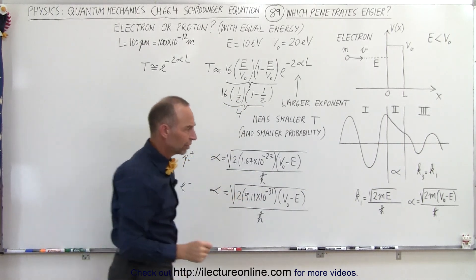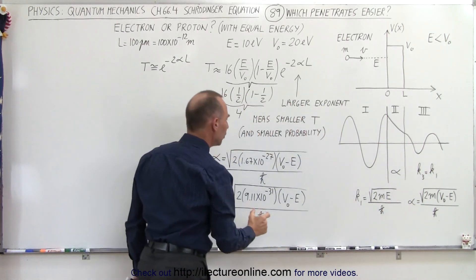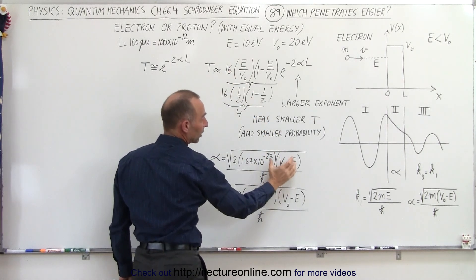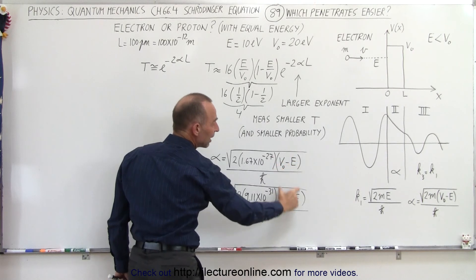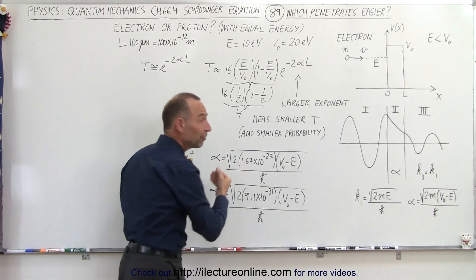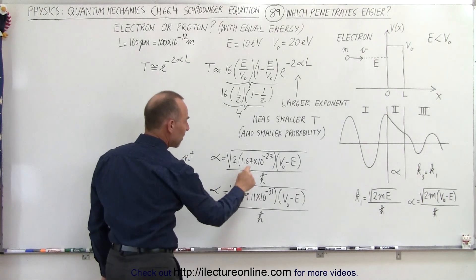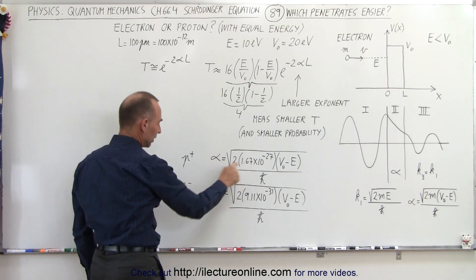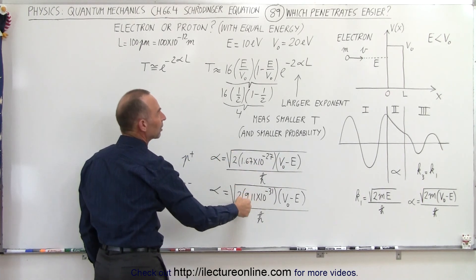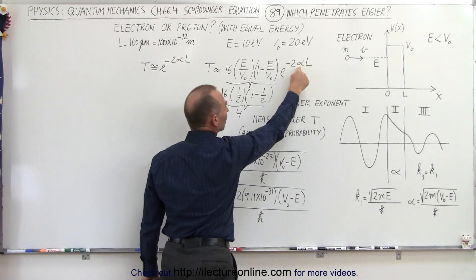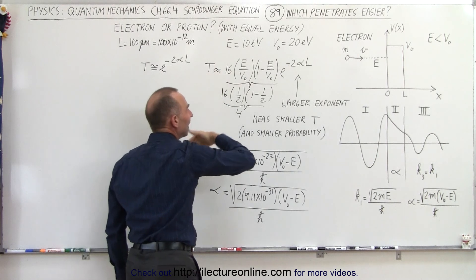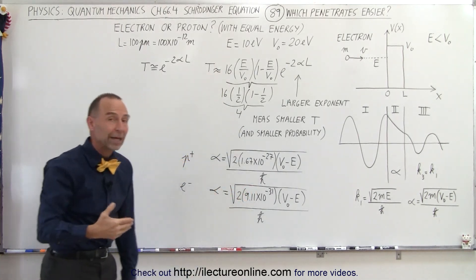Alpha is calculated according to this equation, and notice that since both the proton and electron have the same energy, V minus E is the same in both cases, and h-bar is the same in both. So the only difference is the mass of the particle. Since the mass of a proton is much bigger than the mass of an electron, alpha will be a much bigger number for the proton than for the electron. If alpha is bigger, the transmission coefficient will be smaller, giving a smaller probability to make it through the barrier.